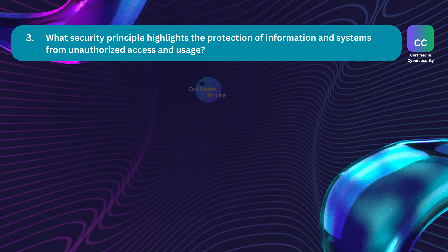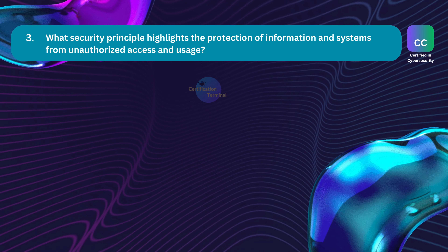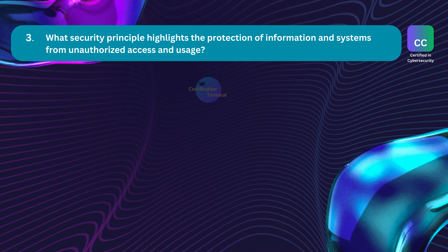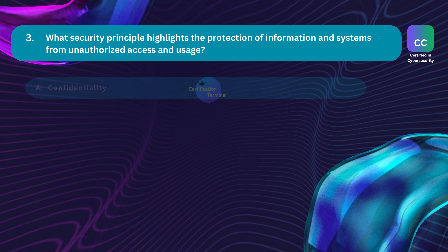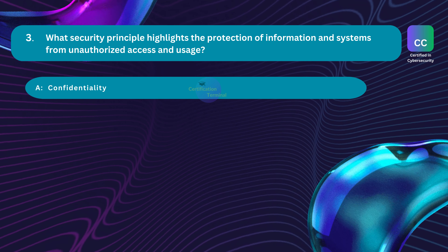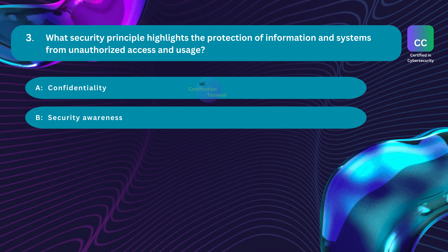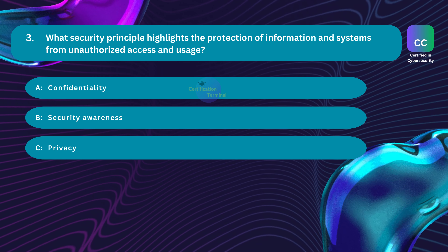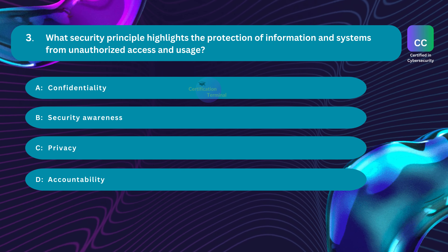Question number 3. What security principle highlights the protection of information and systems from unauthorized access and usage? Option A: confidentiality. Option B: security awareness. Option C: privacy. Option D: accountability.